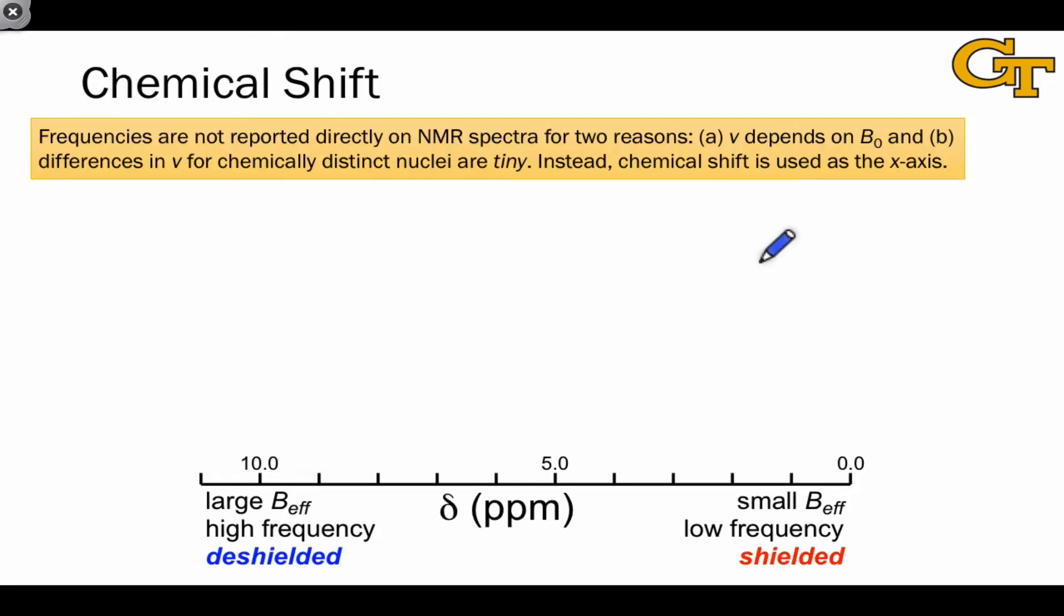We don't report frequencies directly on NMR spectra for two reasons. First, the precession frequency depends on the applied magnetic field, so that frequency varies depending on the magnetic field strength in our instrument. Second, these differences in frequency for protons in distinct chemical environments are tiny. We use chemical shift to address these two factors.